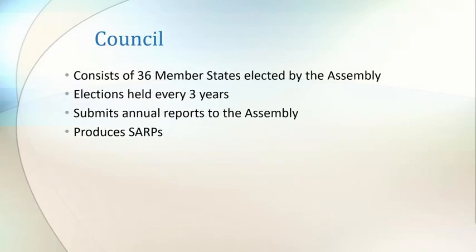The council is a body of ICAO that consists of 36 member states elected by the assembly, each serving a three-year term. Representation considers states of chief importance in air transport, states that contribute the largest provision of facilities, and ensuring that all major geographic areas are covered. The council produces annual reports covering topics such as progress on strategic objectives, new and emerging activities, and finances. It also produces the standards and recommended practices which are placed in annexes to the Chicago Convention.